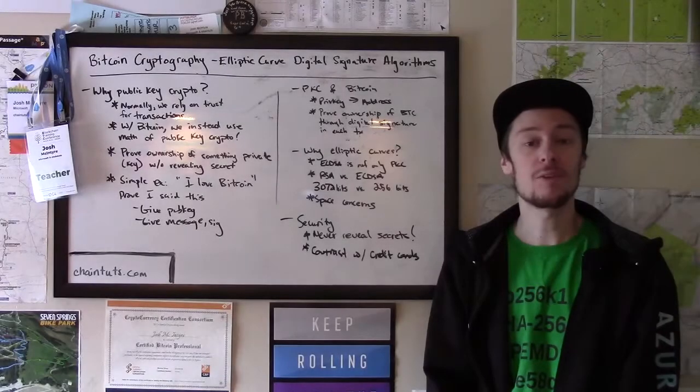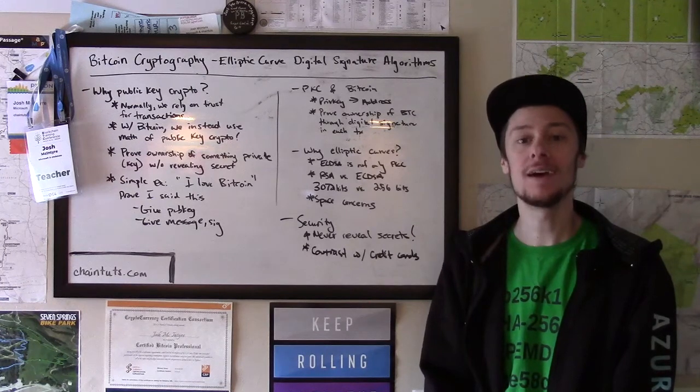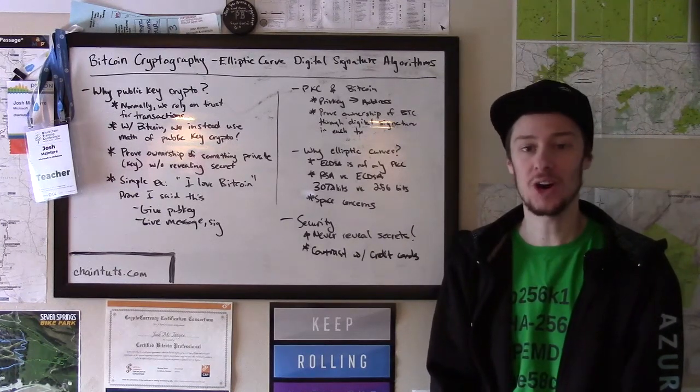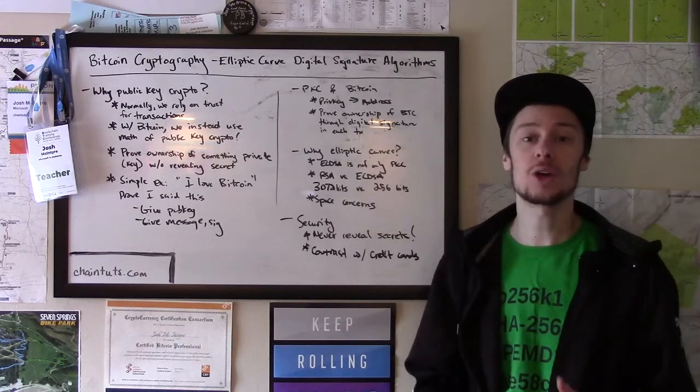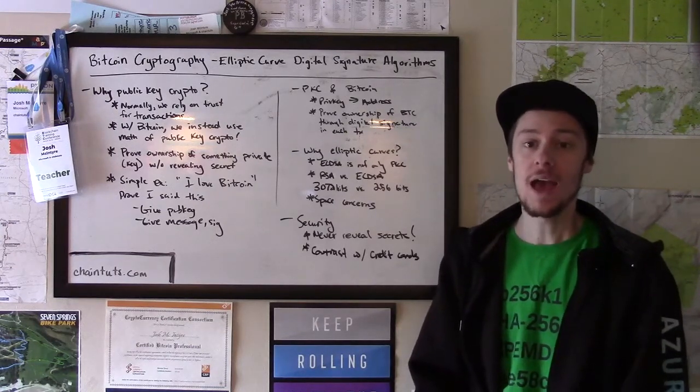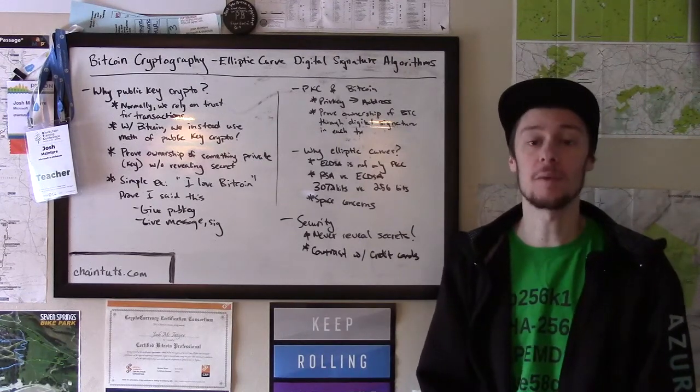Hi everyone, this is Josh with another Bitcoin and blockchain tutorial available at ChainTuts.com. Today we're going to be talking about elliptic curve cryptography and why this form of cryptography is used in cryptocurrencies like Bitcoin.